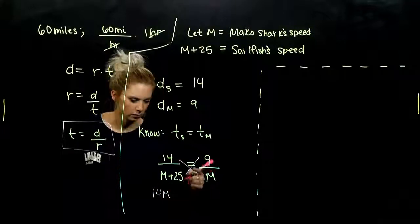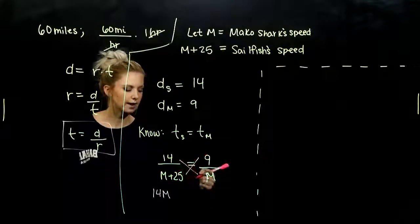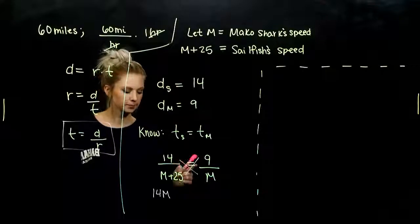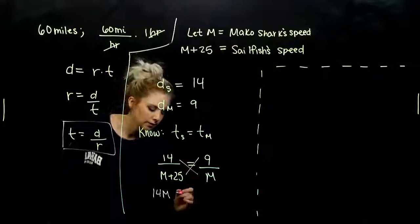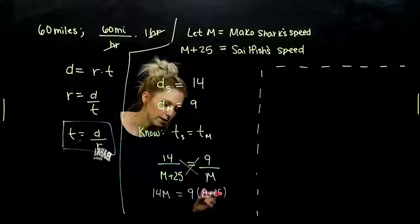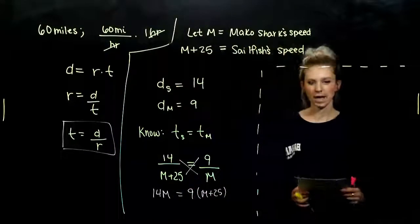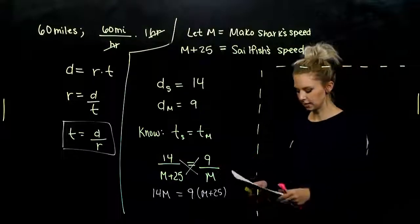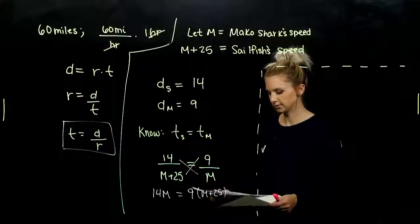Got 14M when I multiply bottom times the top over here. And other direction, 9 times M plus 25. Now that all of my variables are living upstairs, we can go ahead and start solving.